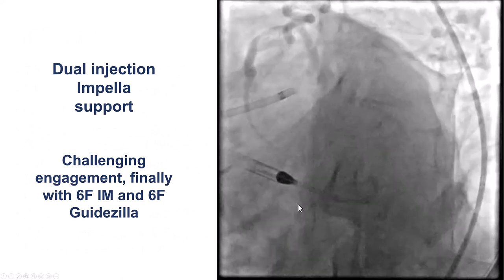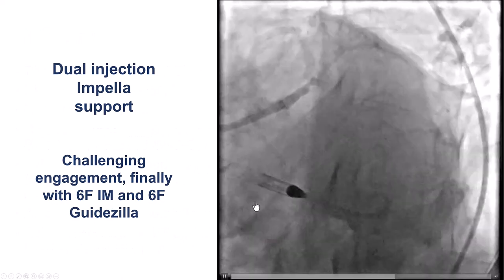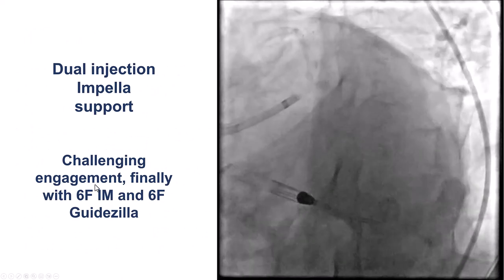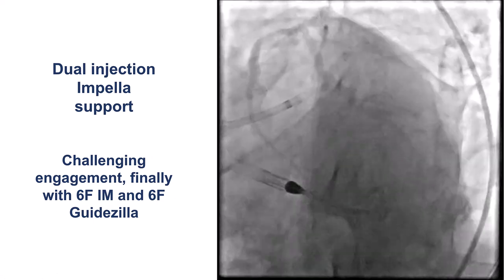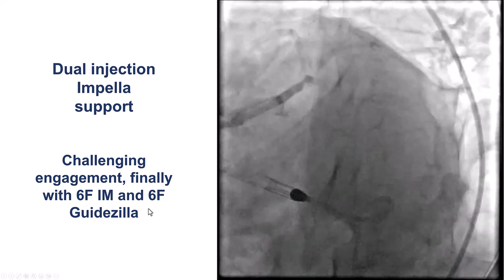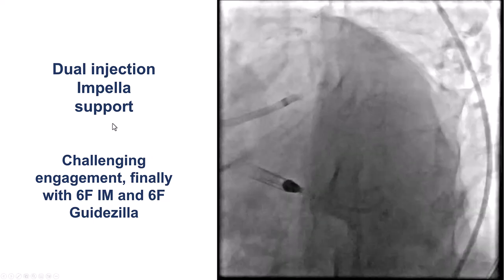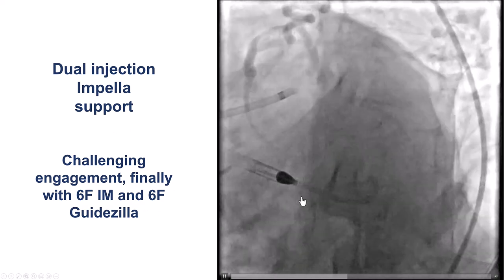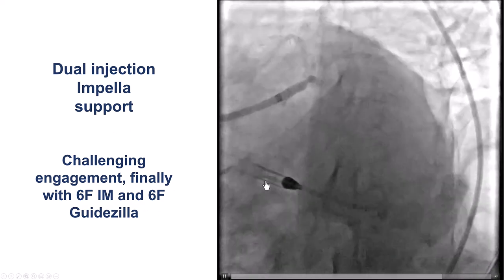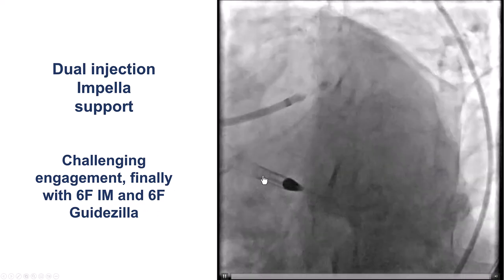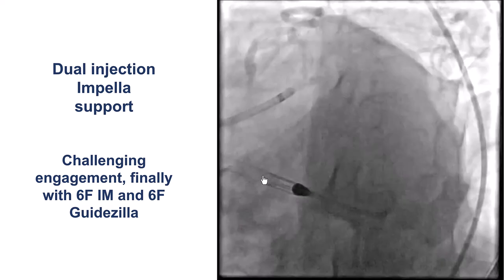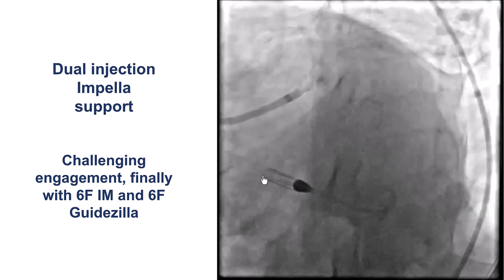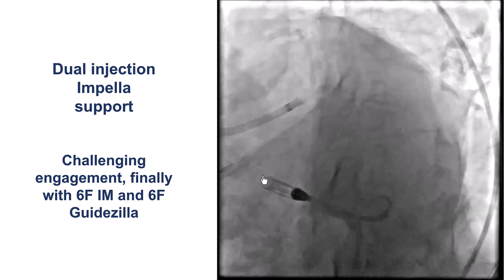The following day, when the patient came to the cath lab, there was difficulty engaging the LIMA, but eventually using an IM guide and a guide extension they were able to engage it. Impella hemodynamic support was also used. Even though there was hemodynamic improvement, the patient was still fairly frail and the potential for hemodynamic compromise remained.